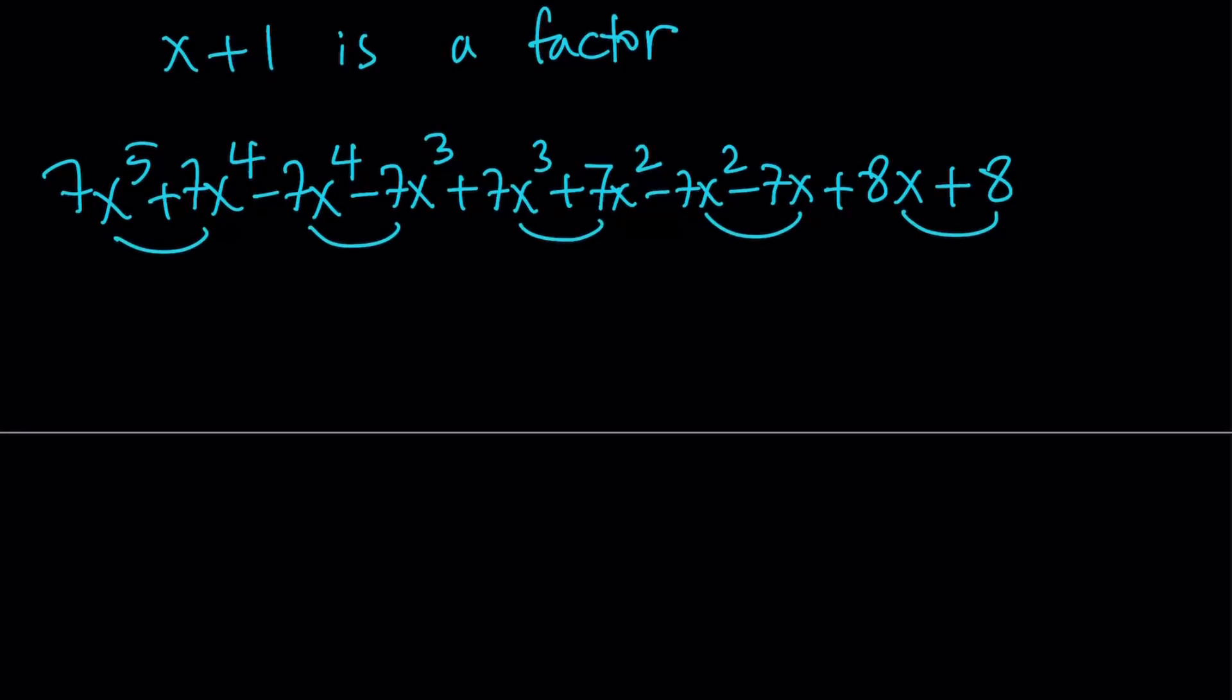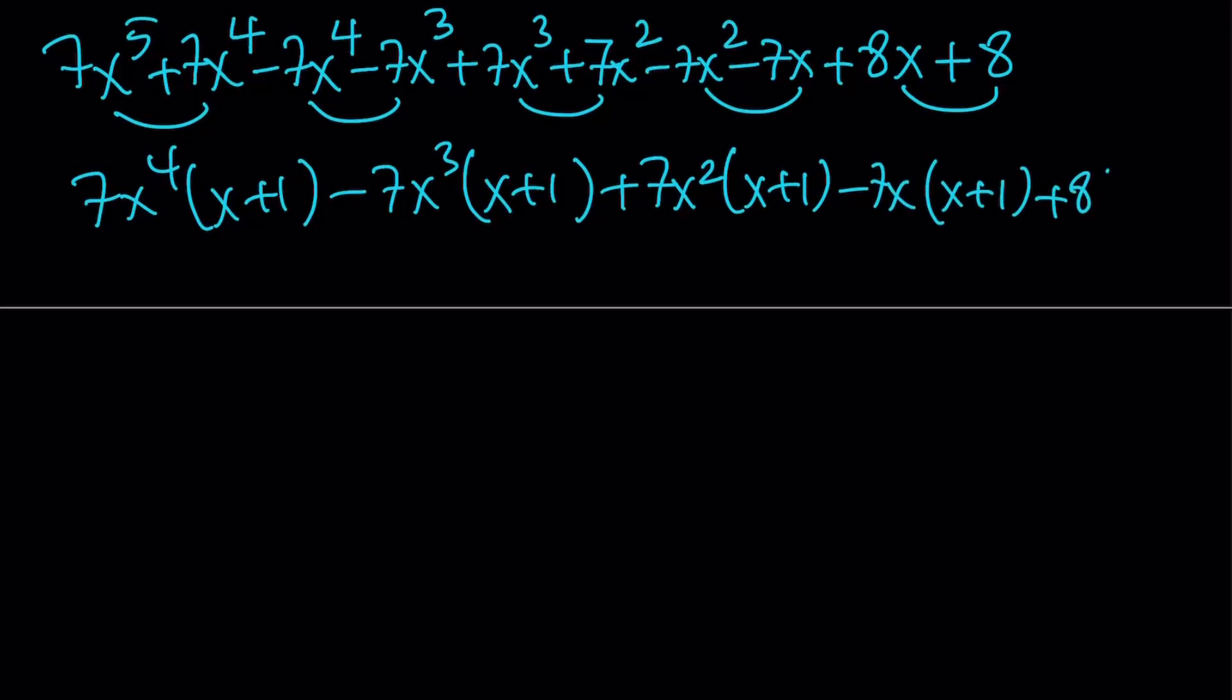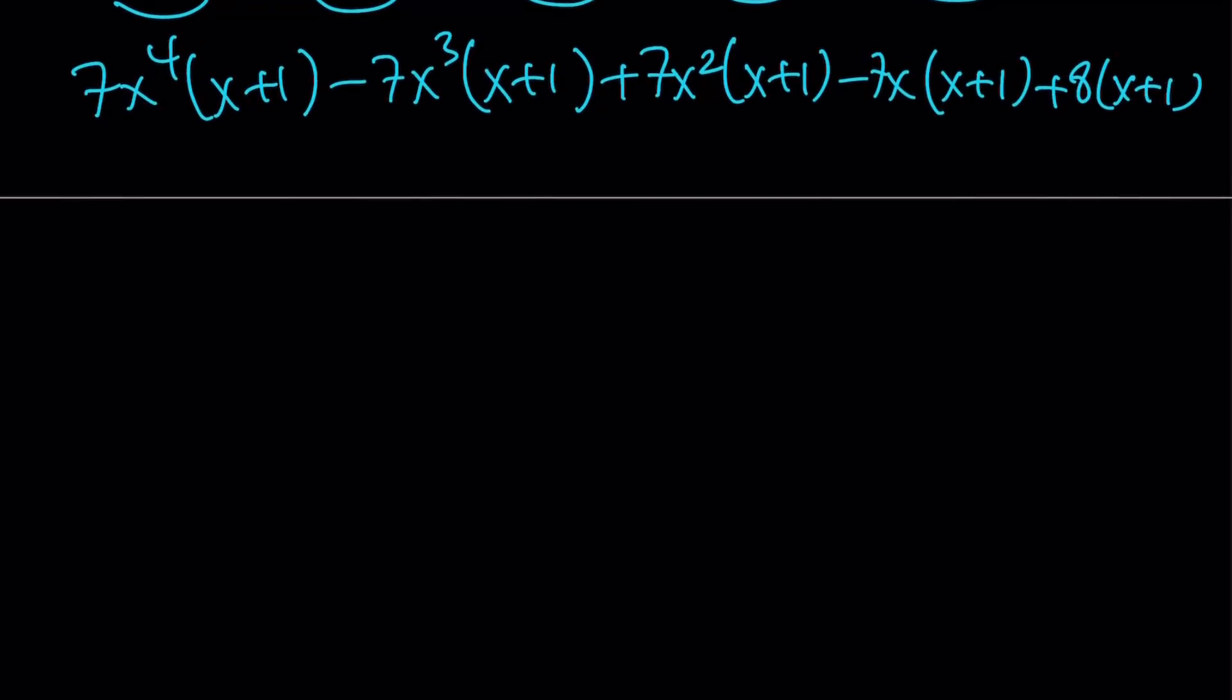So we're going to pair these up. And now take out 7x to the 4th times x plus 1 and then minus 7x cubed times x plus 1 plus 7x squared times x plus 1 minus 7x times x plus 1. And since x plus 1 appears everywhere, we can take out x plus 1 and write this as 7x to the 4th minus 7x cubed plus 7x squared minus 7x plus 8. All right, great.